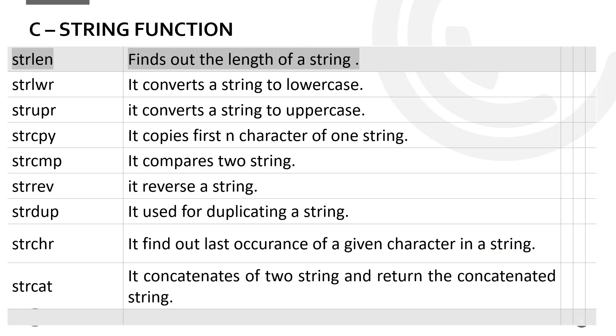Now we will discuss C string functions. This is the basic type of C string functions. Strlen is used to find out the length of string. Strlwr converts string to lower case. Strupr converts string to upper case. Strncpy copies first n characters of one string. Strcmp compares two strings. I am hoping that you are understanding, because string is not very tough, it is very easy and interesting.